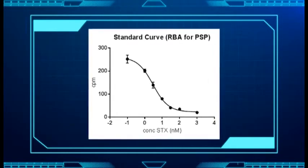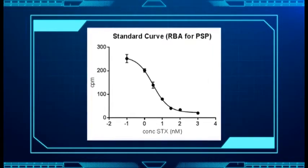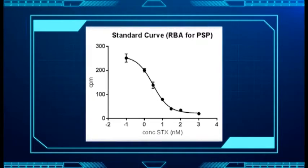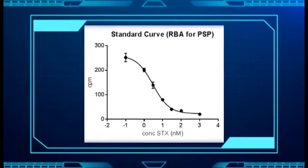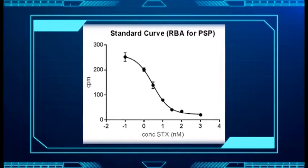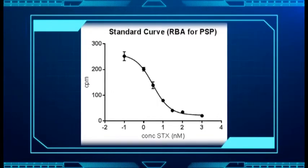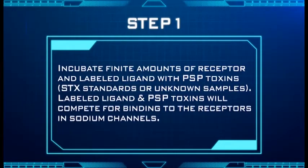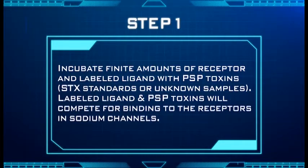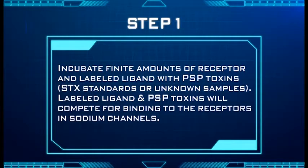A standard curve, generated using known concentrations of the unlabeled saxitoxin standard, is referred to in order to determine saxitoxin concentrations of unknown samples. Step 1: Incubate finite amounts of receptor and labeled ligand with PSP toxins, STX standards, or unknown samples. The labeled ligand and PSP toxins will compete for binding to the receptors in sodium channels.